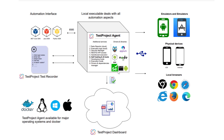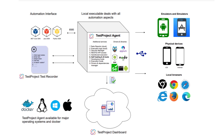The final component of the TestProject platform is the TestProject Cloud, which is meant to store your reports, screenshots, velocity reports, and statistics for both coded and codeless tests. If you're using codeless tests, it'll also store your test artifacts. The cloud will allow you to collaborate with your teammates effortlessly.